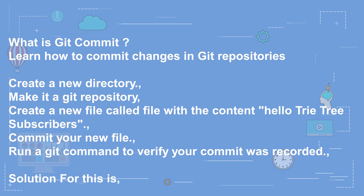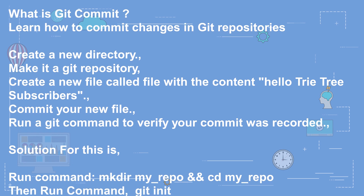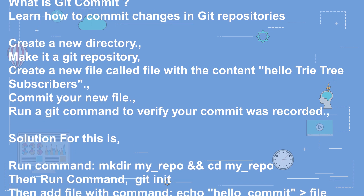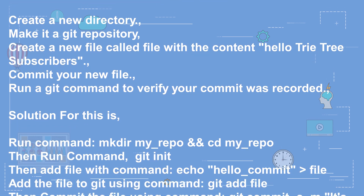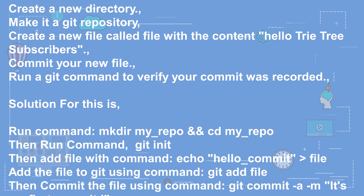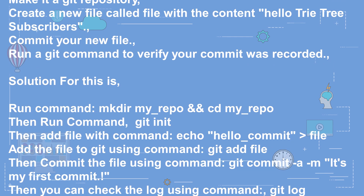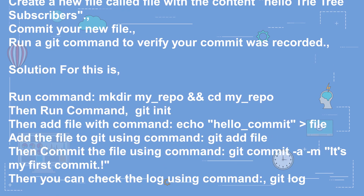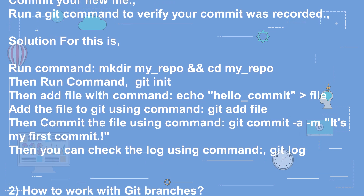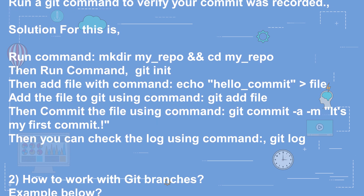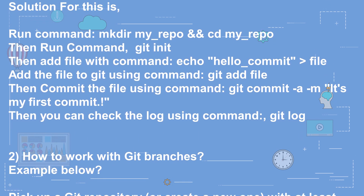Solution: run mkdir my_repo and cd my_repo, then run git init. Add a file with command: echo hello > file. Add the file to git using git add file, then commit using git commit -m 'my first commit'. Check the log using git log.